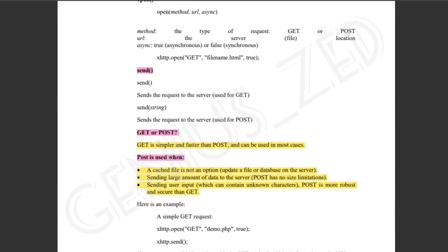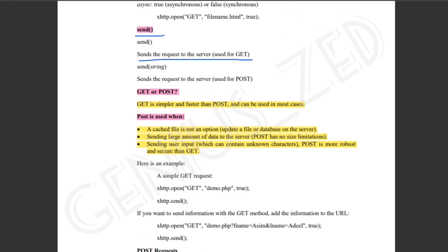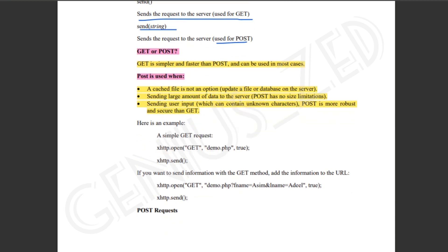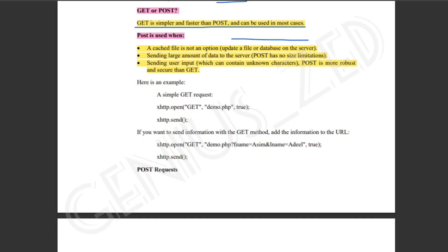To send a request to the server, we use GET. We send an empty string and it is used for POST. GET is simpler and faster than POST and can be used in most cases. POST is used when a cached file is not an option, when you need to update a file or database on the server, or when sending a large amount of data to the server — in that case we use POST.